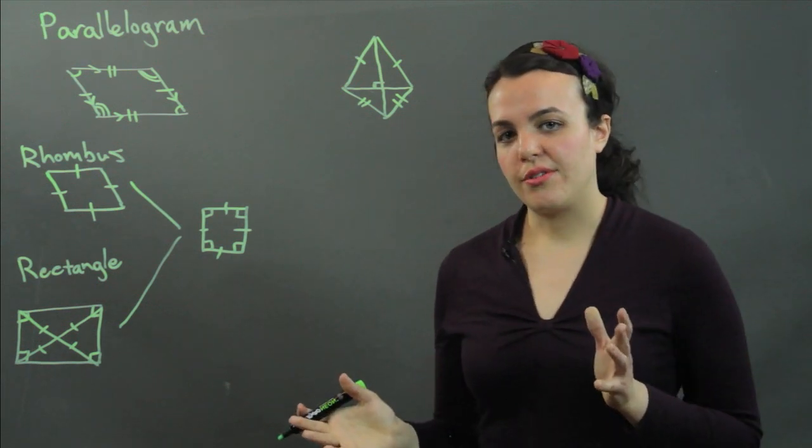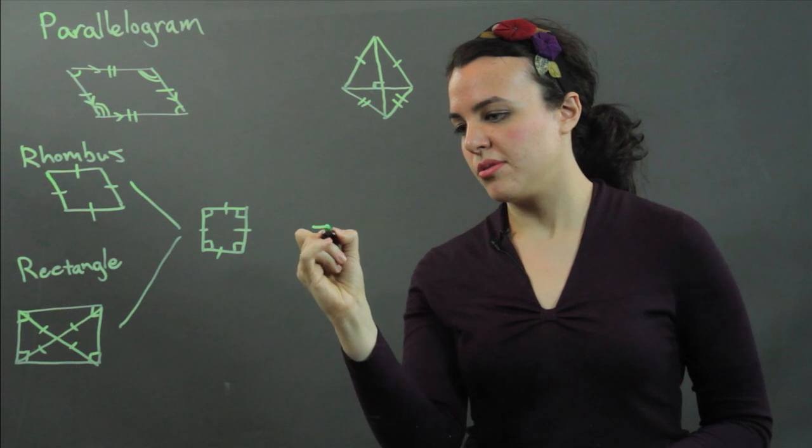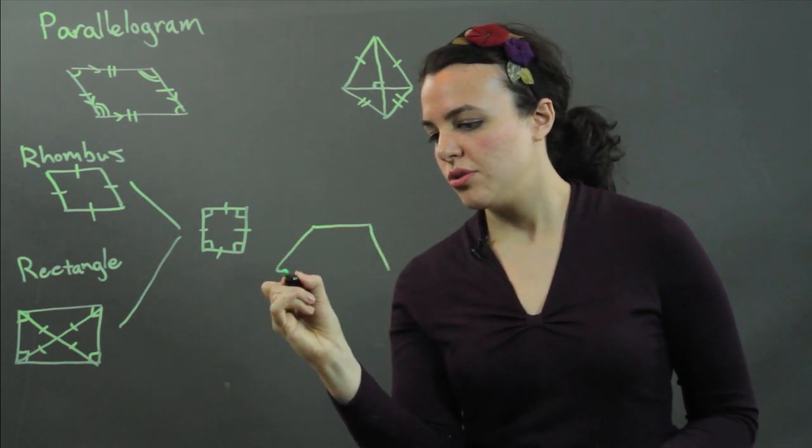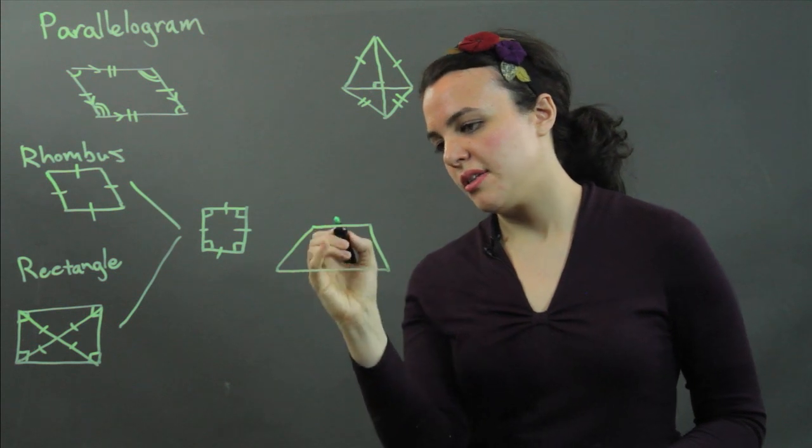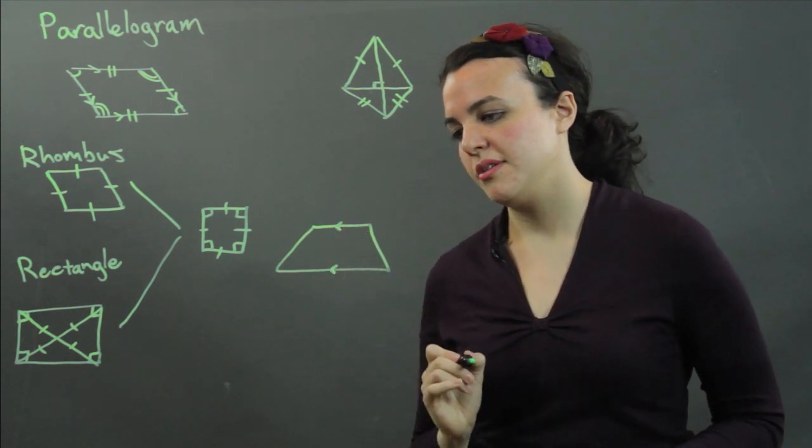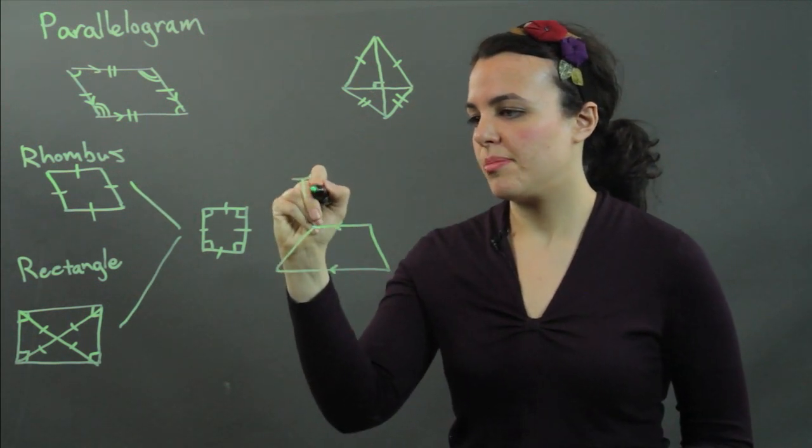And the final quadrilateral that we're going to go over today is the trapezoid. The trapezoid has two lines that are parallel. So one set of parallel lines, and those are called bases. This is the trapezoid.